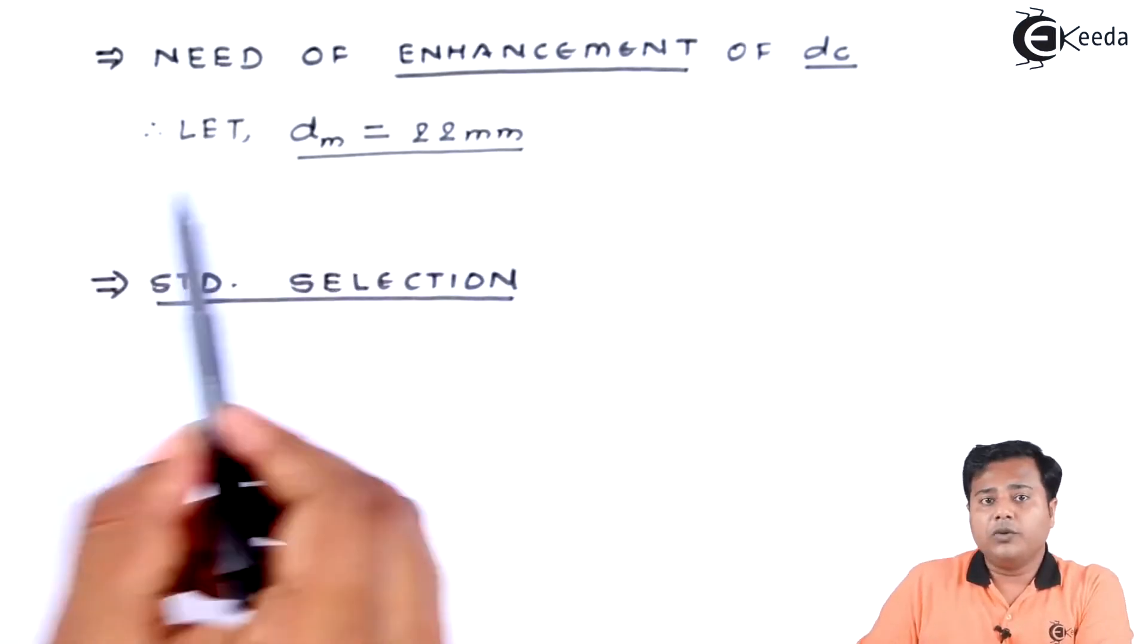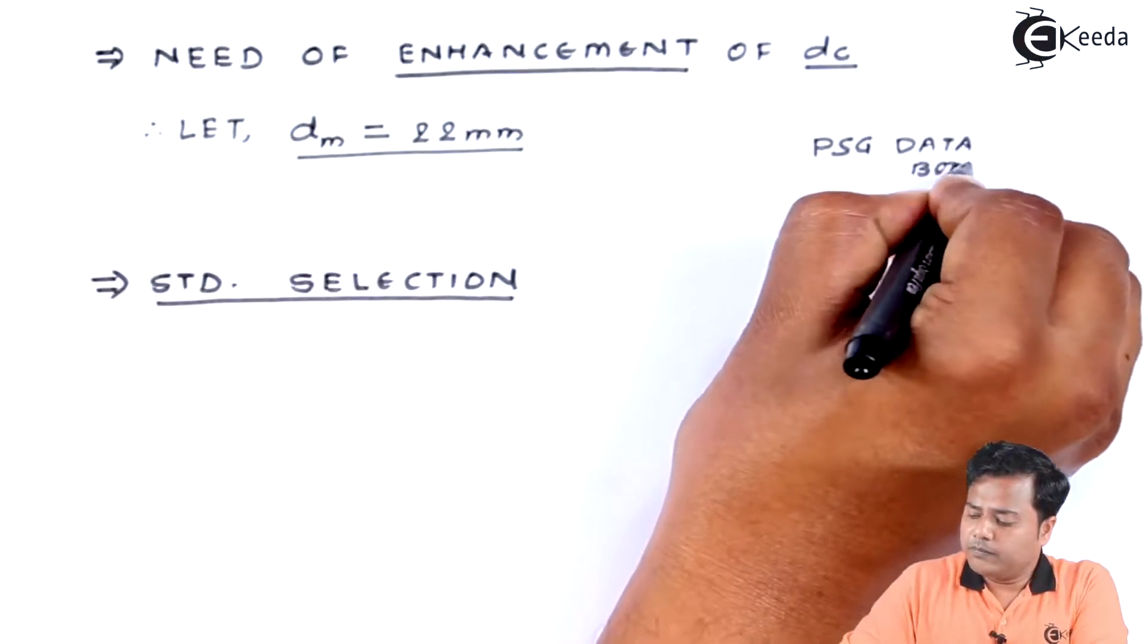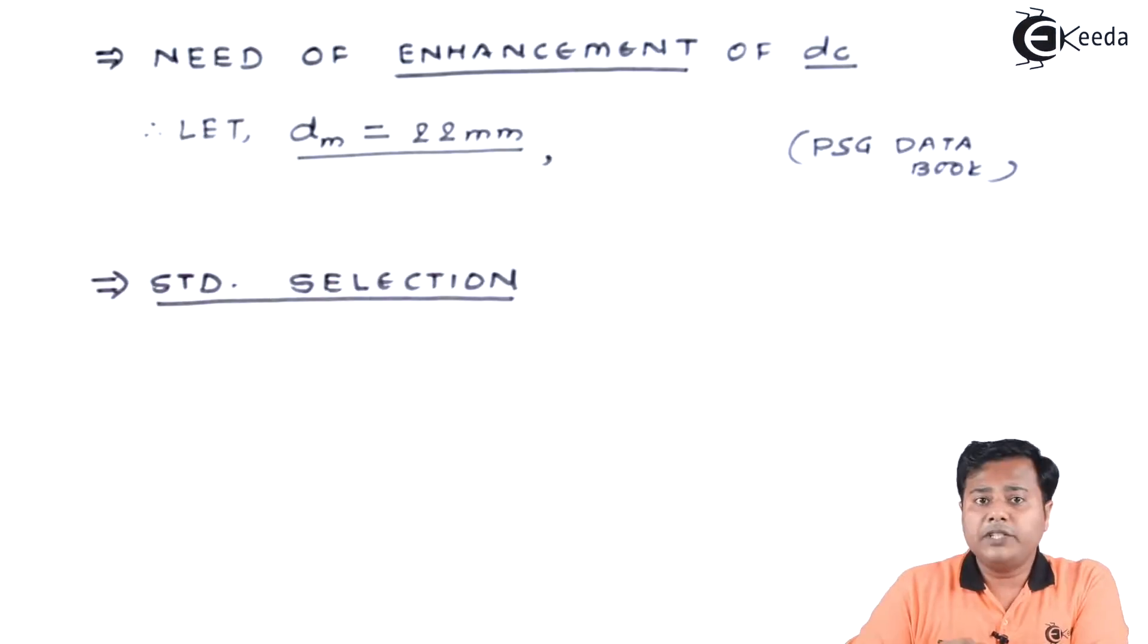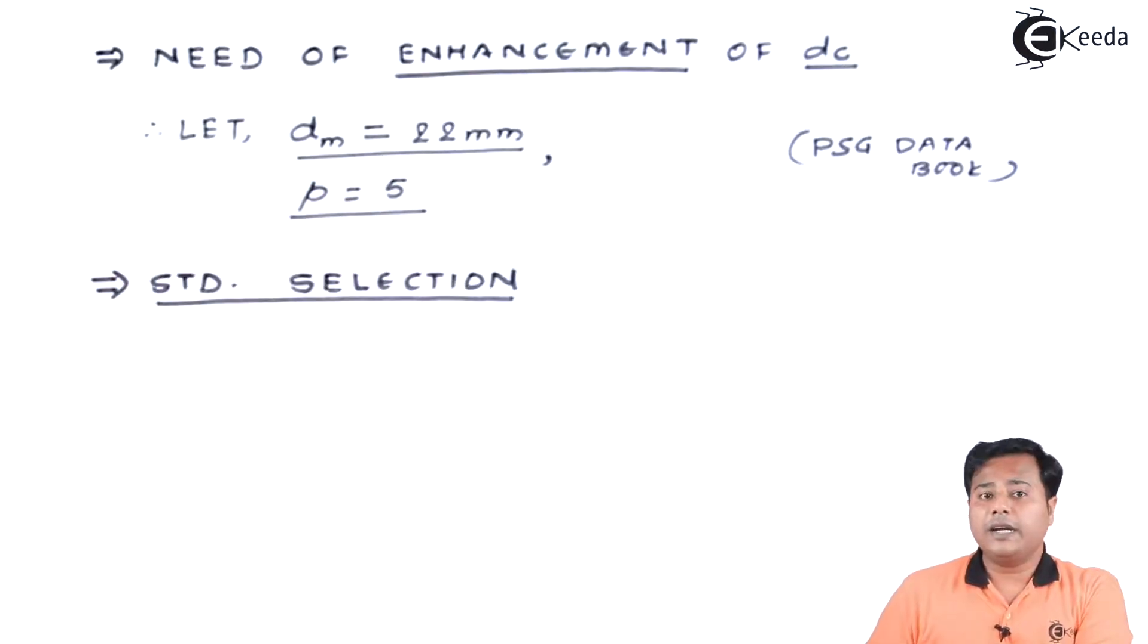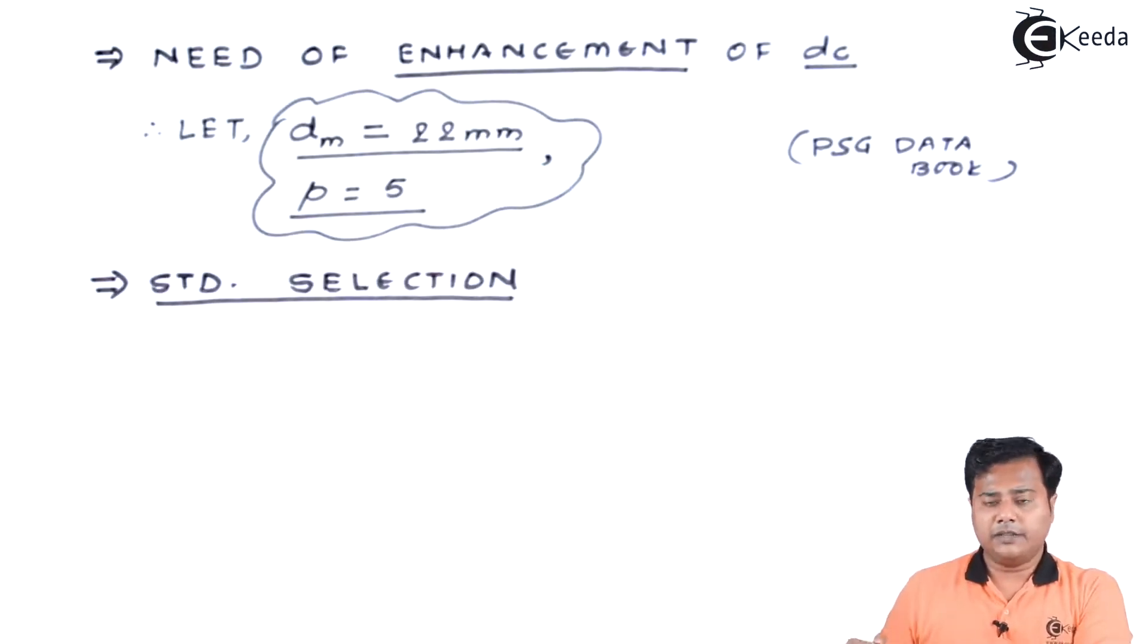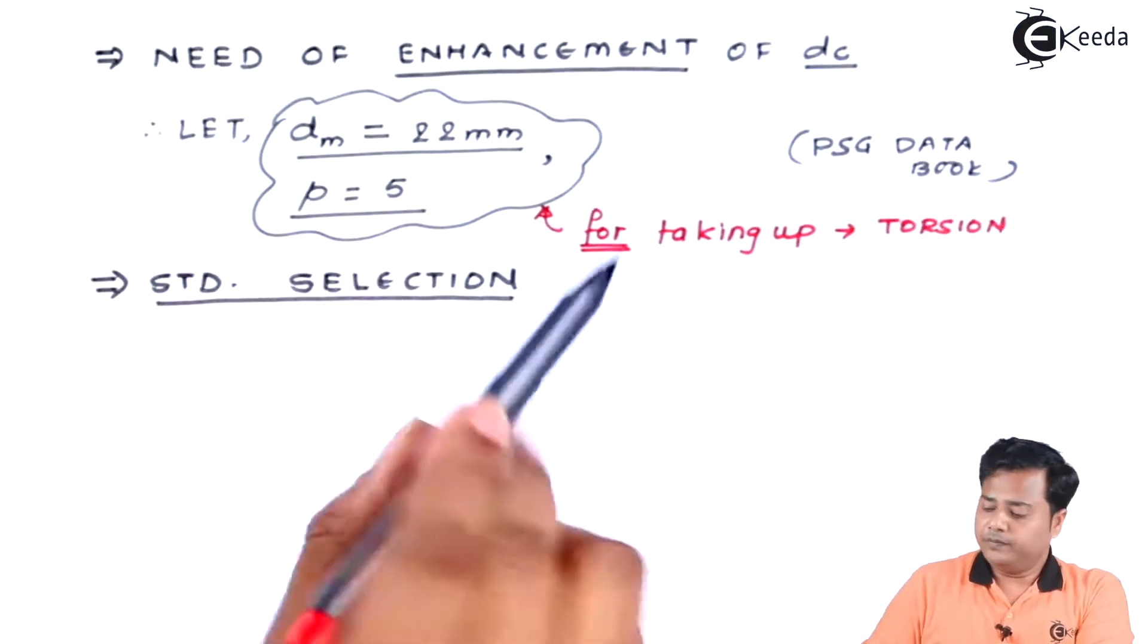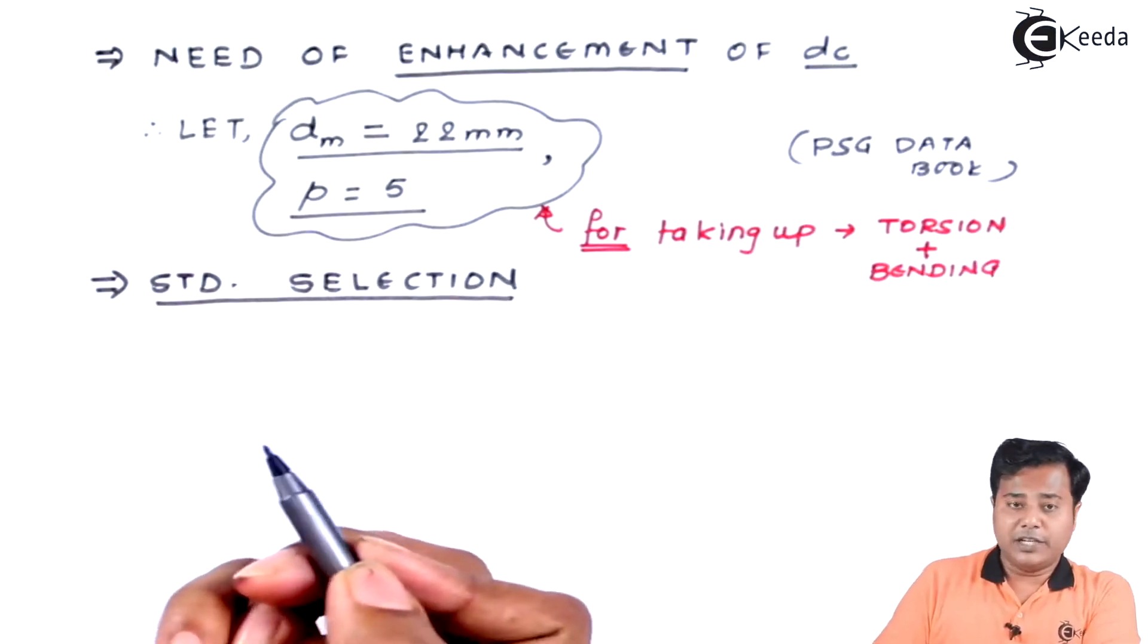This is again a preferred value. You can refer to PSG data book 5.42. You can refer to the power screw sections and then you can select the preferred value. This is one of the preferred values along with which the pitch length or the pitch is given as 5. This is what a standard selection we have. Let me mention that this enhancement is done to take up torsion and bending.